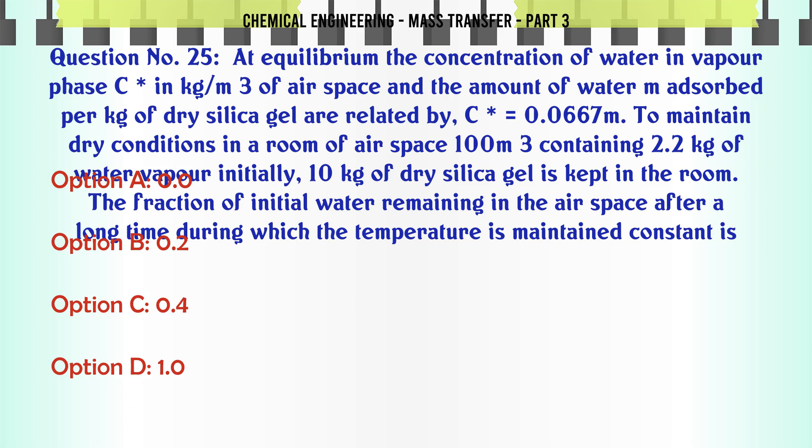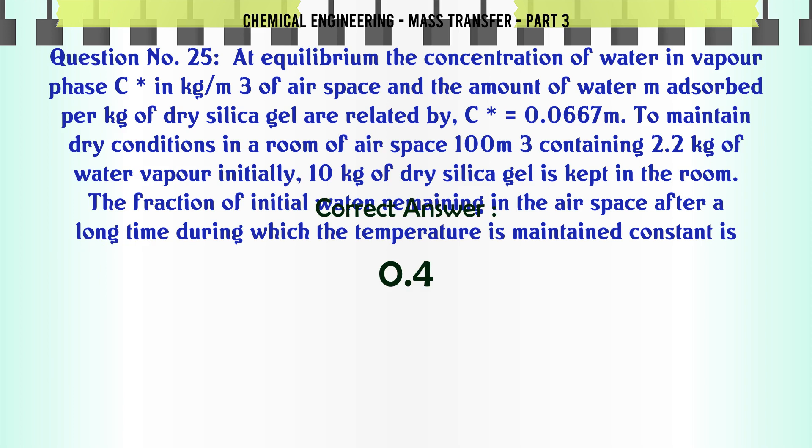At equilibrium, the concentration of water in vapor phase C (in kg/m3 of air space) and the amount of water M adsorbed per kg of dry silica gel are related by C = 0.0667M. To maintain dry conditions in a room of air space 100 m3 containing 2.2 kg of water vapor, initially 10 kg of dry silica gel is kept in the room. The fraction of initial water remaining in the airspace after a long time is: A) 0.0, B) 0.2, C) 0.4, D) 1.0. The correct answer is: 0.4.